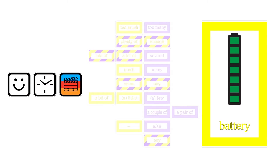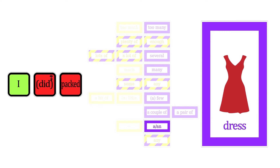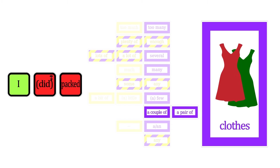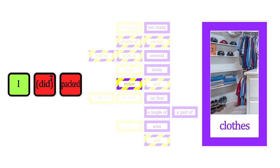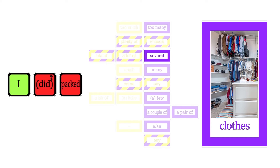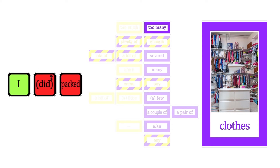Let's change tense and verb this time, with clothes. I didn't pack any clothes. I packed a dress. Here the word clothes changes its meaning — it sometimes happens with some words, so we usually use the name of the piece of clothing, and therefore I've just used dress. I packed a couple of clothes. I packed a pair of clothes. I packed a few clothes. I packed some clothes. I packed many clothes. I packed several clothes. I packed a lot of clothes. I packed lots of clothes. I packed enough clothes. I packed plenty of clothes. I packed too many clothes.